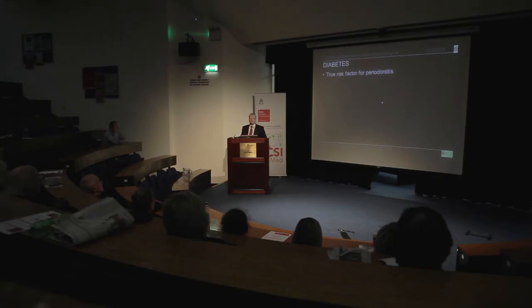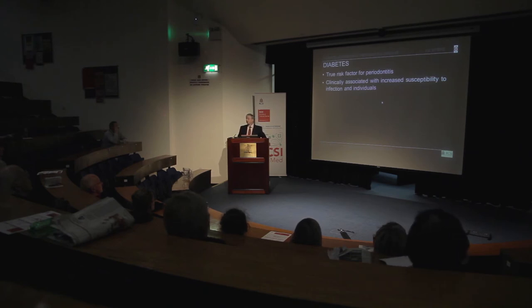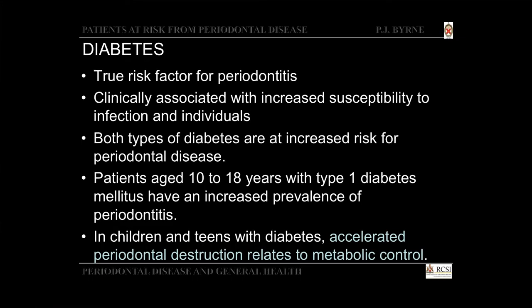We've long known that diabetes is associated with periodontitis and is a true risk factor for periodontal disease, clinically associated with increased susceptibility to infection. Individuals with both type 1 and type 2 diabetes are at increased risk for periodontal disease, and children and teens with diabetes show accelerated periodontal destruction related to the metabolic control of the diabetes. Periodontal disease is more severe and prevalent in patients with type 1 and type 2 diabetes, as shown in multiple global studies — including large-scale studies in a group of Pima Indians in the US.